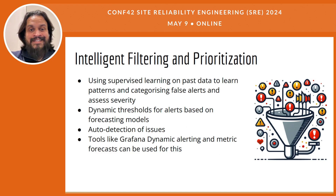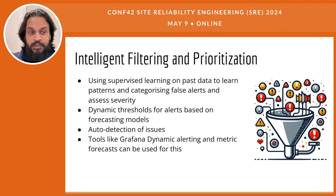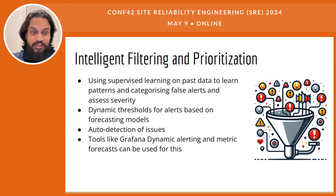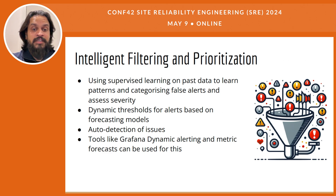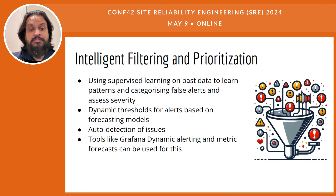This approach not only improves response time but also helps in the allocation of resources where they are needed most. Traditional static thresholds for system alerts often either lead to a flood of notifications during peak load or miss early signs of critical issues during lower activity periods. By employing AI-driven forecasting models, dynamic thresholds can be set that adjust based on predicted changes in system behavior or load. This method uses historical data to forecast future states and adjust alert sensitivity accordingly, enhancing the system's ability to preemptively flag potential issues before they escalate. Dynamic monitoring thresholds can prevent potential bottlenecks or failures, allowing for more proactive rather than reactive management strategies.